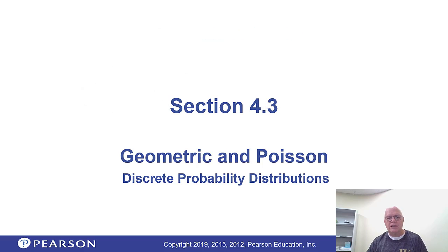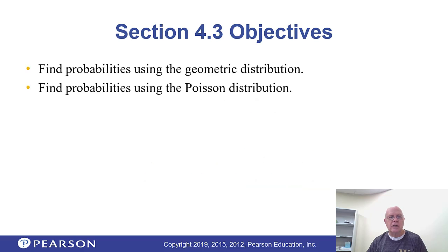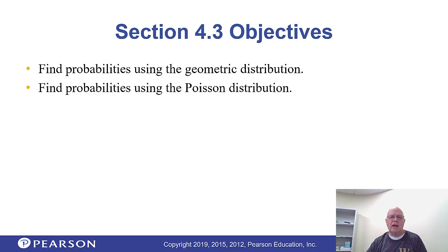Geometric and Poisson distributions. We're going to find the probabilities using both, and they're not too hard. Once you've got a couple of those initial ones done with binomial, this will seem very familiar. Poisson is a little bit different, geometric is a little bit different, but the basic idea is the same — you go to the same place in your calculator and just pick out a different one and put in the parameters that apply.